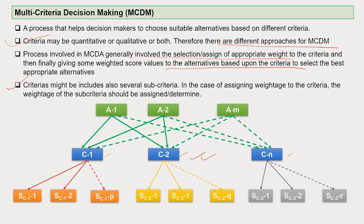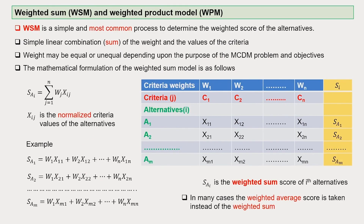Criteria might also include several sub-criteria. When assigning weightage to each criterion, the weightage of the sub-criteria should also be assigned or determined. WSM — Weighted Sum Method, or Weighted Sum Product Model — is a very simple and most common process to determine the weighted score of the alternatives. We largely use linear combinations of the weights and the values of the various criteria. The weights given may be equal or unequal depending upon the purpose of the MCDM analysis.